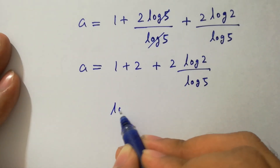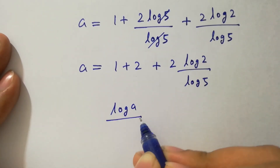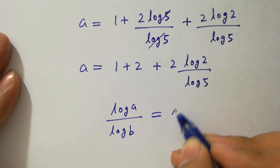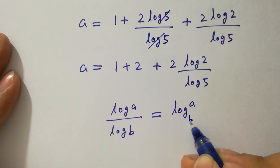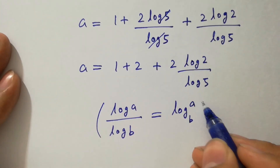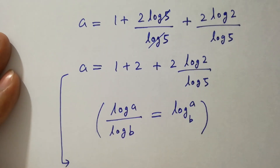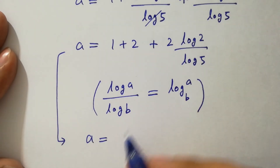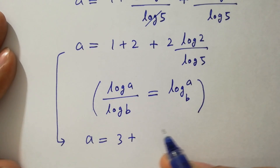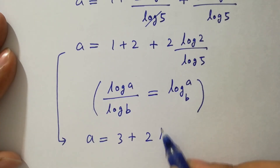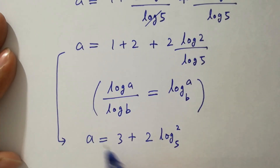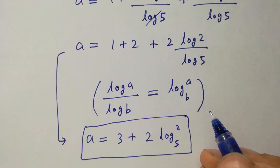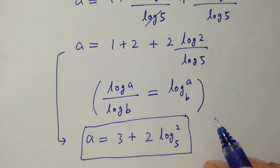As we know, log A over log B equals log A to the base B. So a will be equal to 3 plus 2 log 2 to the base 5, which is the value of a. In the next step I am going to verify.